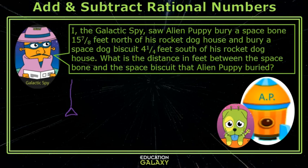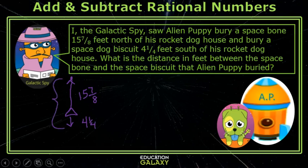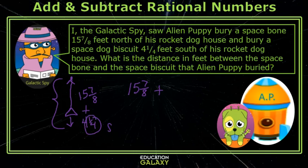I, the galactic spy, saw alien puppy bury a space bone 15 and 7 eighths feet north of his doghouse. I also saw him bury a space dog biscuit 4 and 1 fourth feet south of his doghouse. What is the distance between the space bone and the space dog biscuit? To figure this out, we must add the distances. I need to rewrite the 1 fourth as eighths, and I know that 1 fourth is the same as 2 eighths. Now I write down my common denominator and add my numerators and my whole numbers.